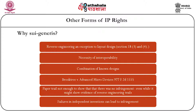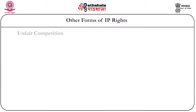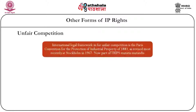Another form of intellectual property not much discussed in the Indian context is unfair competition. Interestingly, there are several statutory provisions in international regimes and judicial cases that have evolved. The international legal framework for unfair competition is laid down in the Paris Convention for Protection of Industrial Property in 1883, revised as recently as 1967 in Stockholm, and is now part of TRIPS mutatis mutandis.